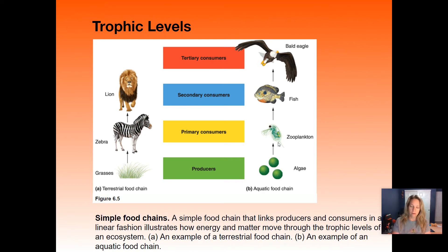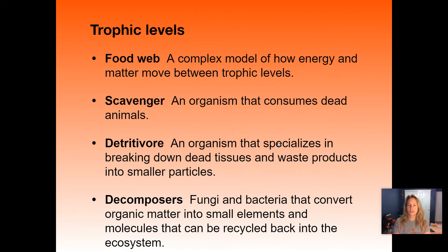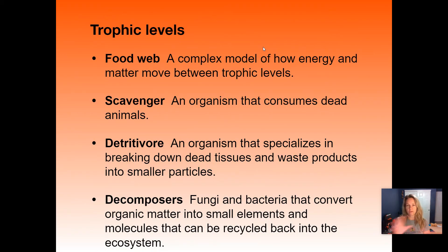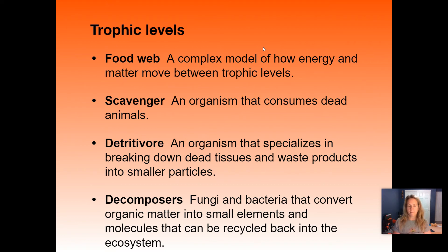Humans can also be primary consumers if we're only eating plants. A food web shows that level of complexity — a food chain shows just one chain of events in one direction, whereas a food web shows all the different possibilities. Scavengers are organisms that consume dead animals, like a vulture. A detritivore breaks down dead tissue and waste products — a dung beetle is a good example. Decomposers like fungi and bacteria break down organic matter and ultimately return energy back into the soil.